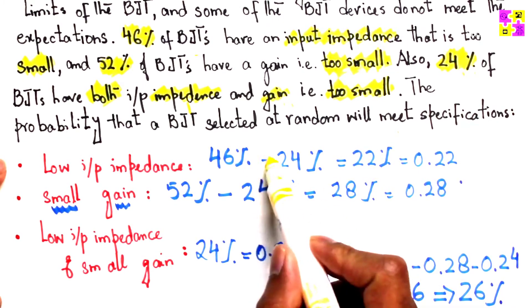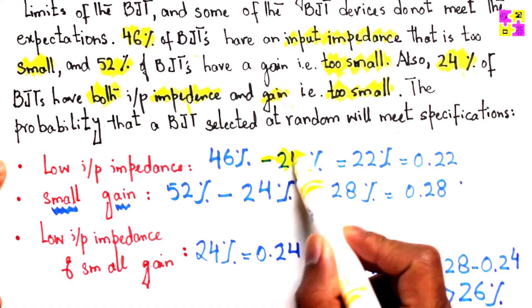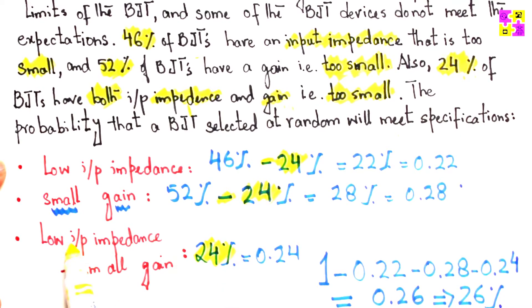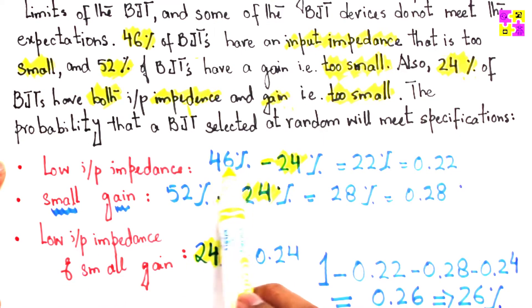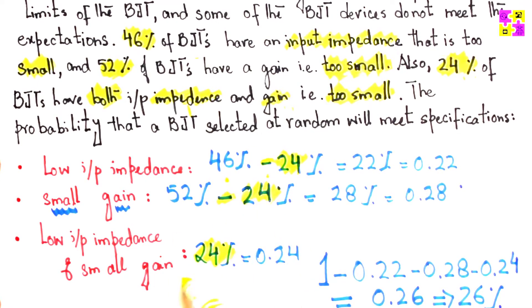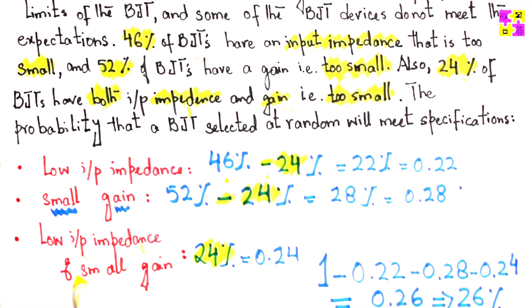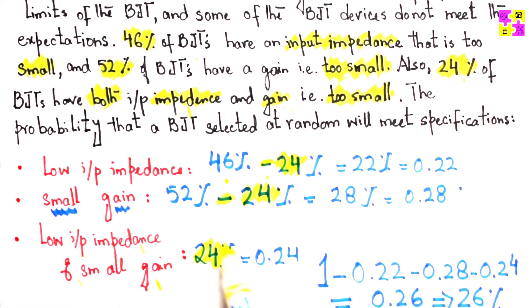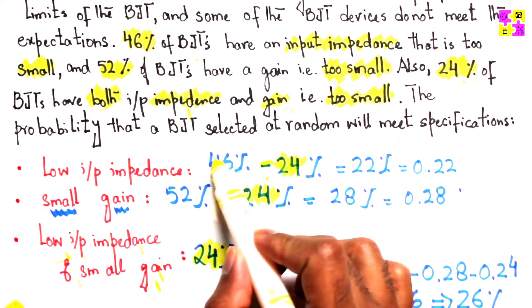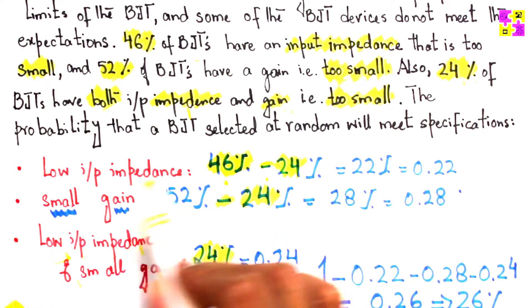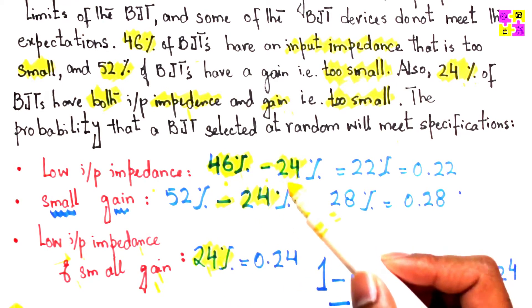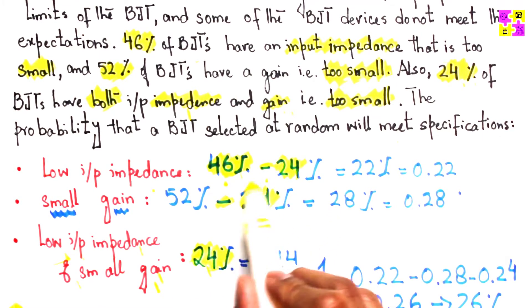I just want to emphasize one more time, if you're still confused why we're subtracting 24% here: remember that 24% is already included here. I have to subtract 24% from this 46%, otherwise we're double counting it. These 24% of the BJTs have both low impedance and small gain. Because we have a bigger number here, low input impedance, we have to subtract 24%, otherwise they'll be counted twice.